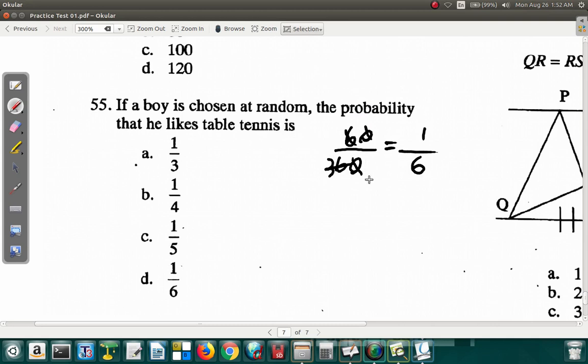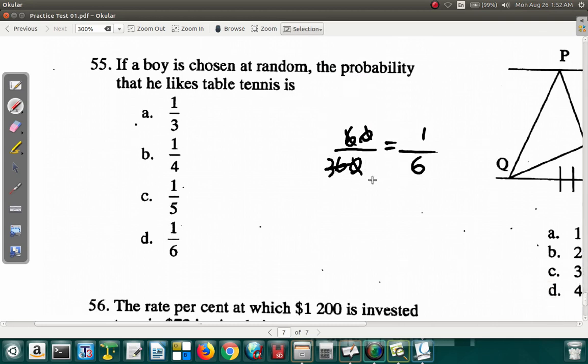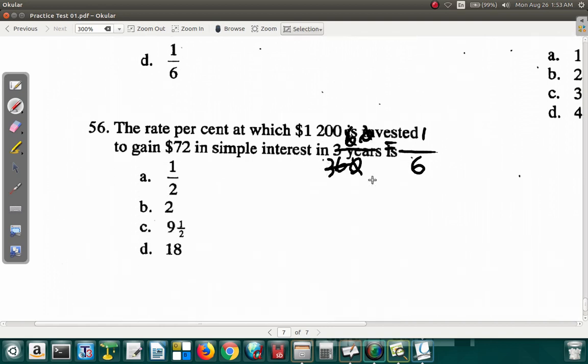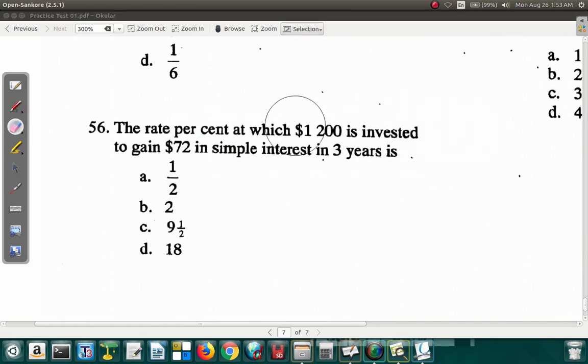That's dealing with statistics and probability. Let's look at 56. What did you get for 56? Remember, you should have done all these questions already before looking at these videos. Let's see what this is about. The rate percent at which $1200 is invested to gain $72 in simple interest in three years is -